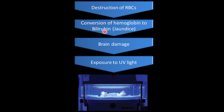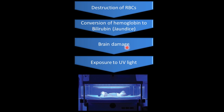Bilirubin is toxic for the body. It can cross the lipid bilayer, reach the brain, and enter cells, causing brain damage. To avoid this in the newborn baby, the newborn is exposed to mild UV light. The ultraviolet light breaks down the bilirubin present in the newborn, which further minimizes brain damage. This was all about erythroblastosis fetalis.